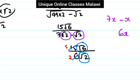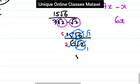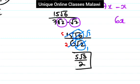After simplifying 15 over 6, we get 5 over 2. And the square root of 16 divided by the square root of 2 simplifies as well. Our final answer is 5.